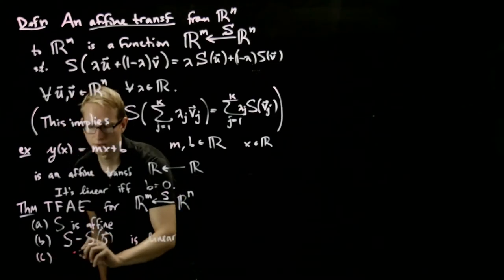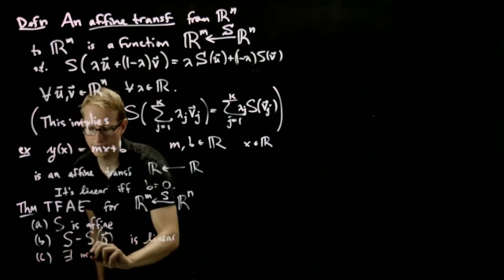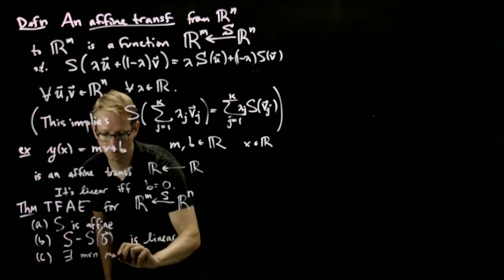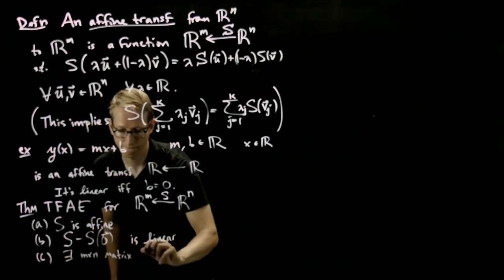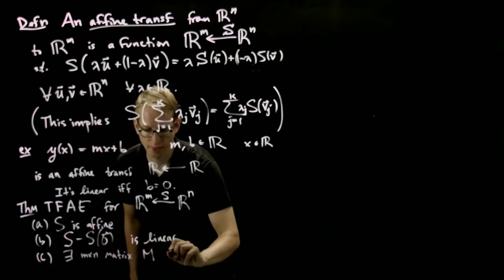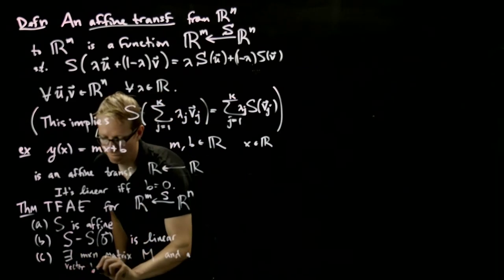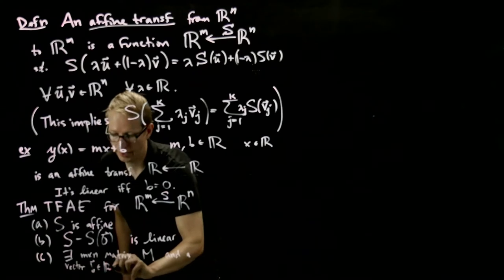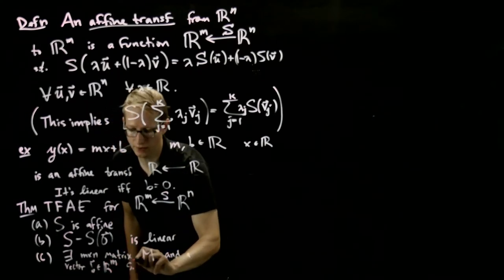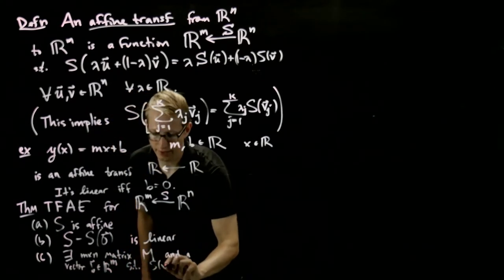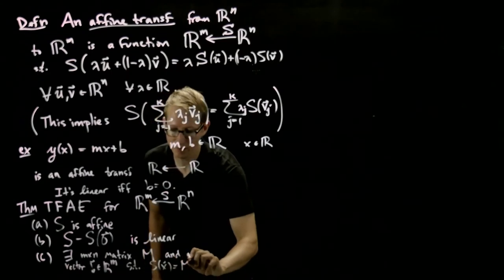And C, there exists an m by n matrix M and a vector b in R^m such that s(x) = Mx + b.